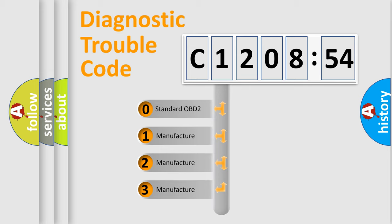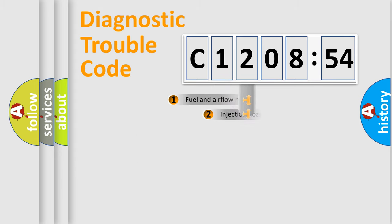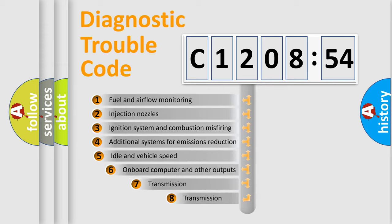If the second character is expressed as zero, it is a standardized error. In the case of numbers 1, 2, 3, it is a manufacturer-specific expression of the car-specific error.